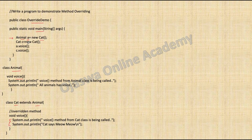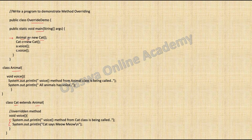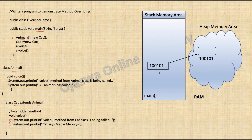Whenever you assign your object to a superclass reference and you want to use the object to call a method, that method should be an overridden method — it should be present in the superclass as well as the subclass with the exact signature. As soon as this object is created — object of type Cat and the reference variable is Animal — memory is allocated for the object. The reference variable is stored on the stack and the actual object is created on the heap. There are no instance variables, so memory for instance variables is not allocated.